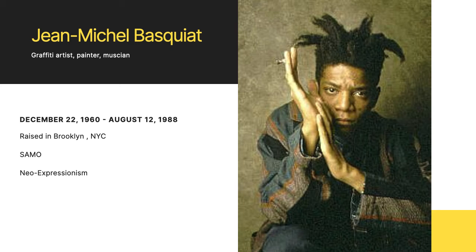Basquiat's father was from Haiti and his mother was of Puerto Rican descent, so he was able to both read and speak in French, Spanish, and English from a young age. According to his teachers, Basquiat was extremely intelligent. They encouraged him to develop an interest, of which the main one was art. However, his home life was quite unstable and he ran away from home at the age of 15.